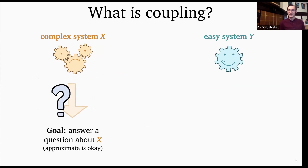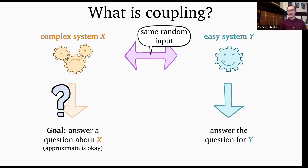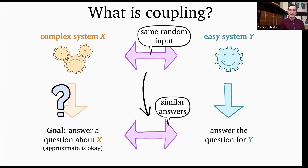Couplings have the following ingredients: we take the complex system and the easy system and make sure they have something in common — usually the same random input. So if X and Y are stochastic processes, they'll share the same random outcomes behind both processes. Hopefully you've chosen a system Y that's easy enough to answer the question, and the big idea in coupling is to choose Y similar enough that when you give both systems the same random input, you end up with similar answers.